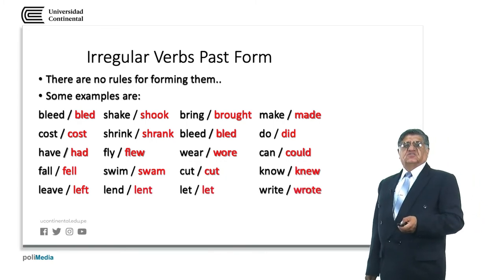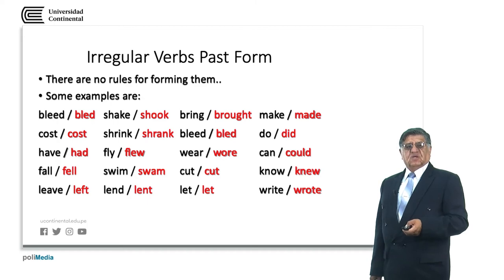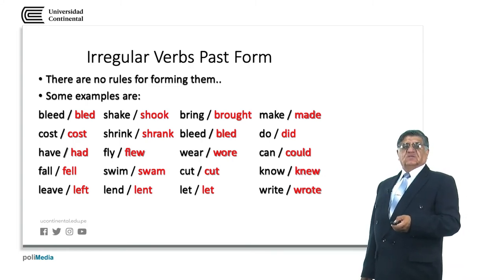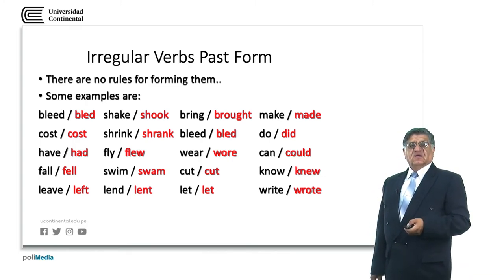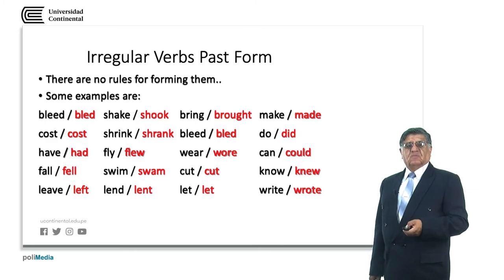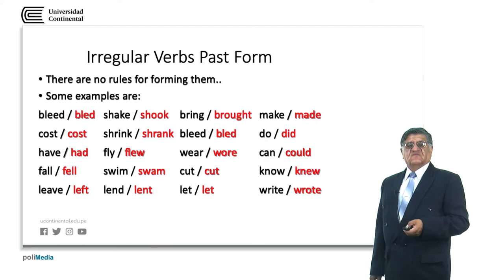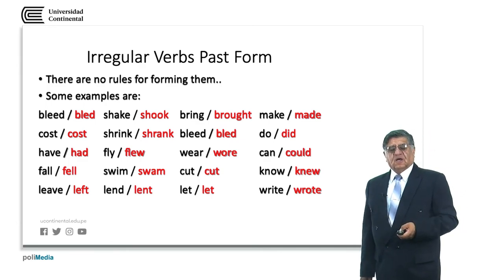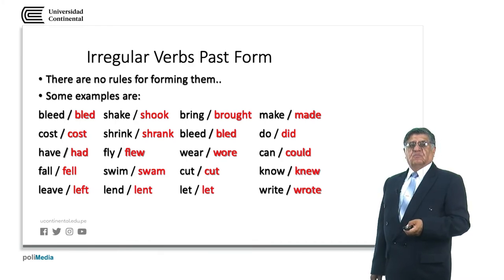Some irregular verbs in the past have a different form than in the present: bleed, bled; shake, shook; bring, brought; make, made; cost, cost; shrink, shrunk; do, did; have, had; fly, flew; wear, wore; can, could; fall, fell; swim, swam; cut, cut (doesn't change); know, knew; leave, left; let, let (doesn't change); write, wrote. There are many more irregular verbs, so you need to practice them by reading and writing.